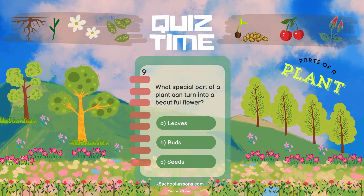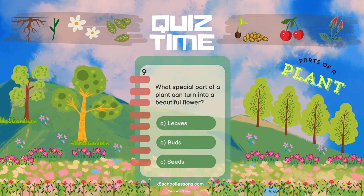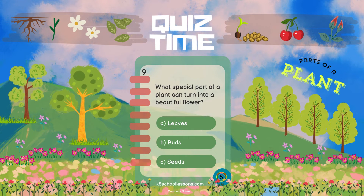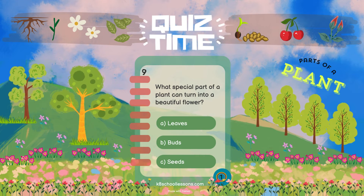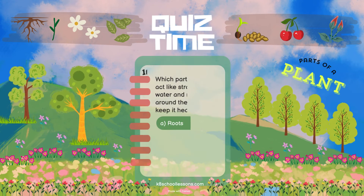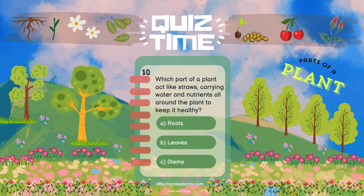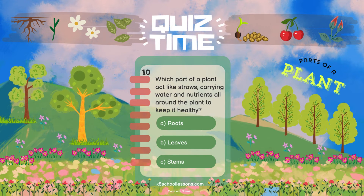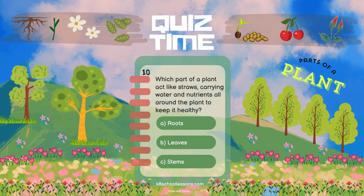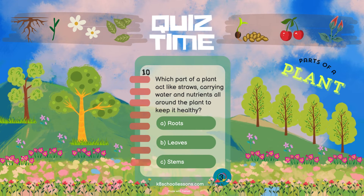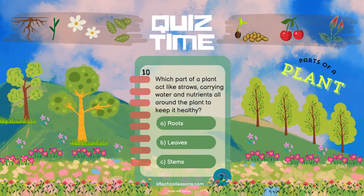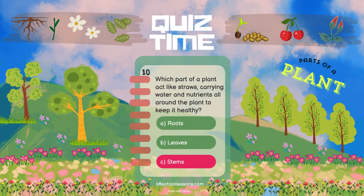What special part of a plant can turn into a beautiful flower? Which part of a plant acts like straws, carrying water and nutrients all around the plant to keep it healthy? Stems.